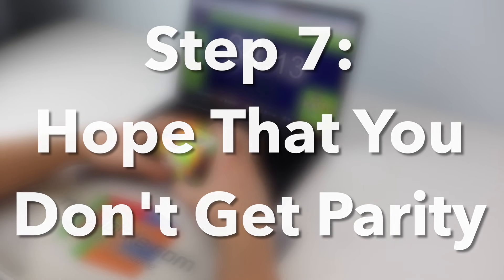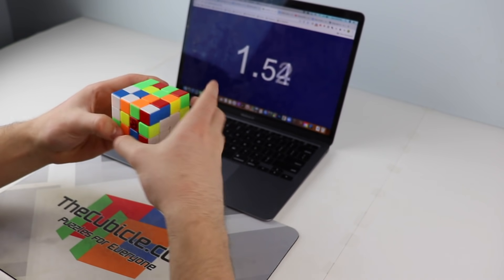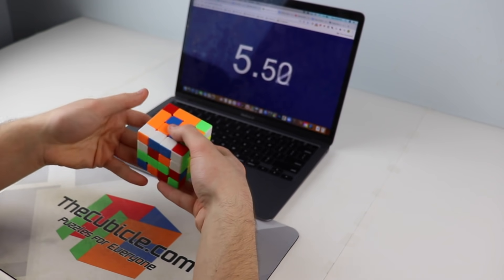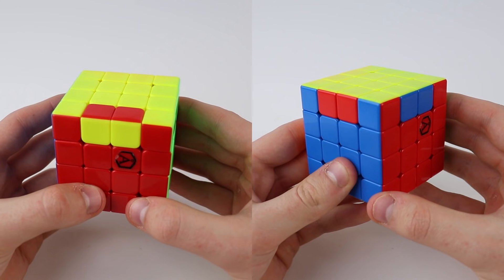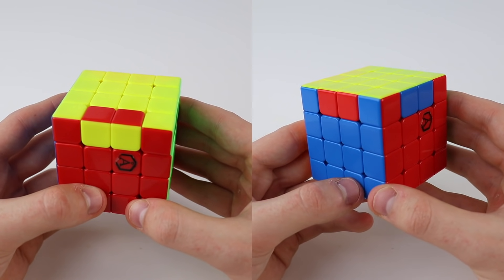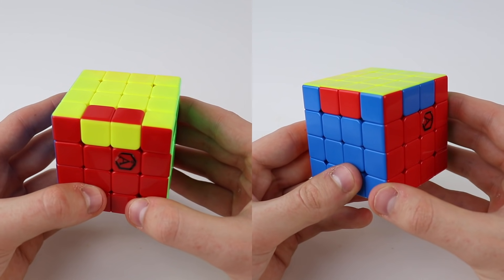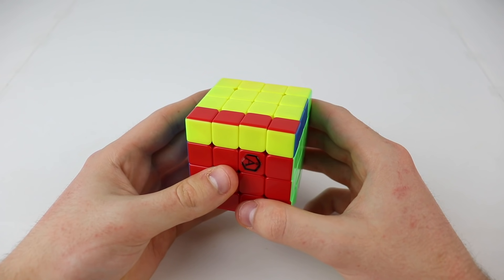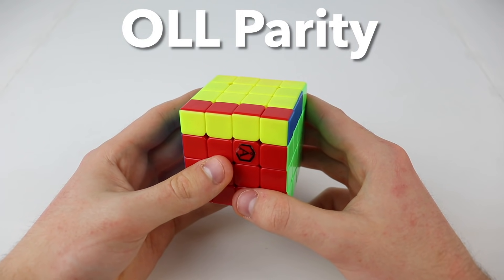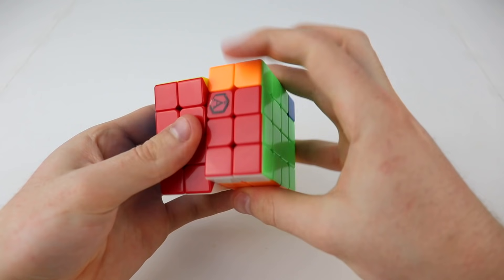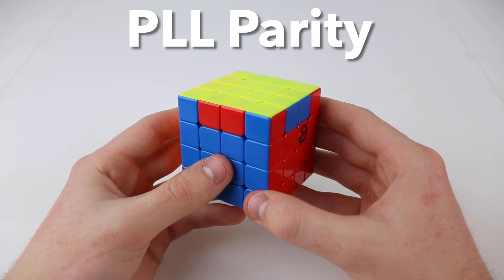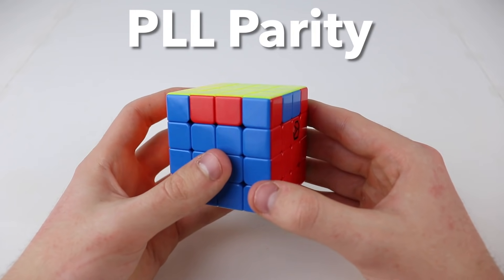Hope that you don't get parity. Parity is the final middle finger that 4x4 throws at you any time that you're trying to solve quickly. Parity refers to one of two situations that can appear on the 3x3 stage of 4x4 that cannot appear on a 3x3, and both take an extra algorithm to solve. The flipped edge, also known as OLL parity, is awful, and doing the algorithm to fix it will take most people at least 3 seconds. The two swapped edges, or PLL parity, aren't as bad to fix most of the time, but you're still going to lose at least a second or two whenever it comes up.